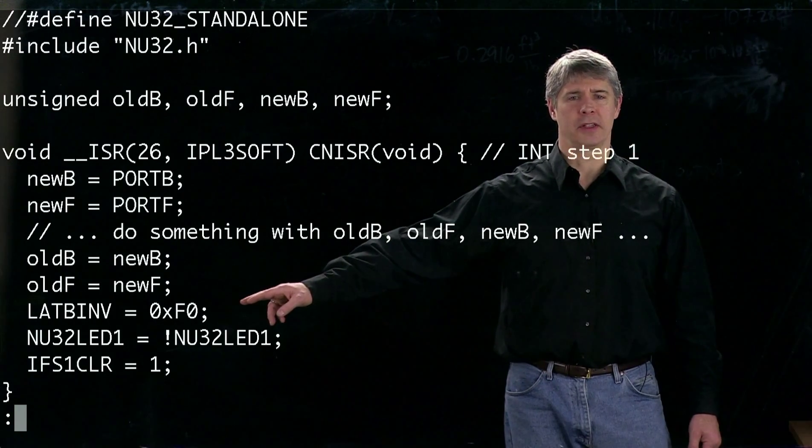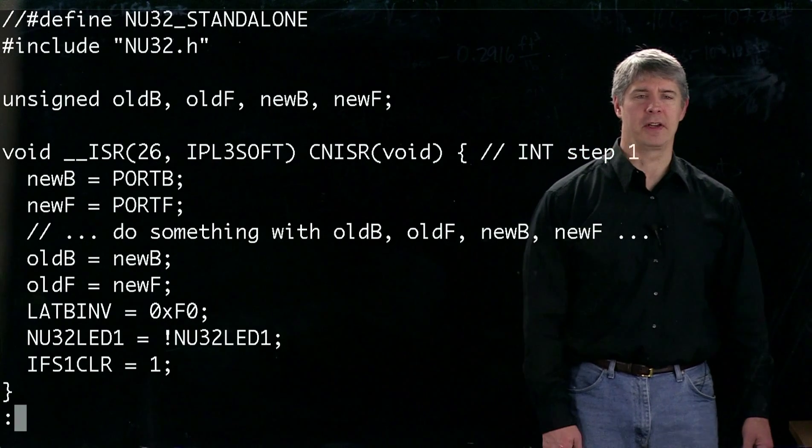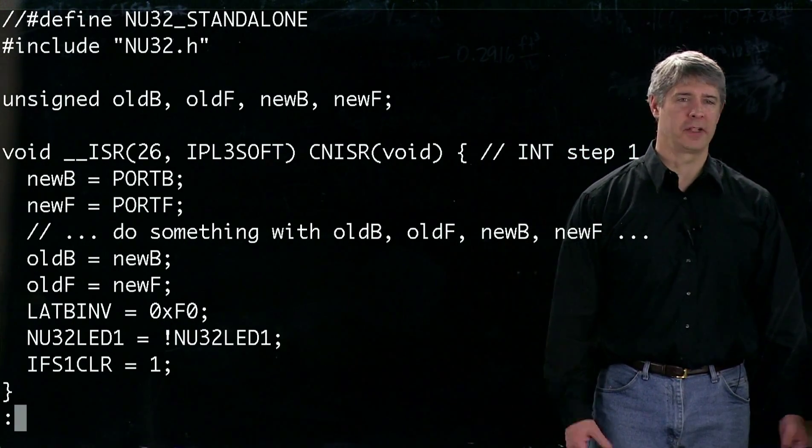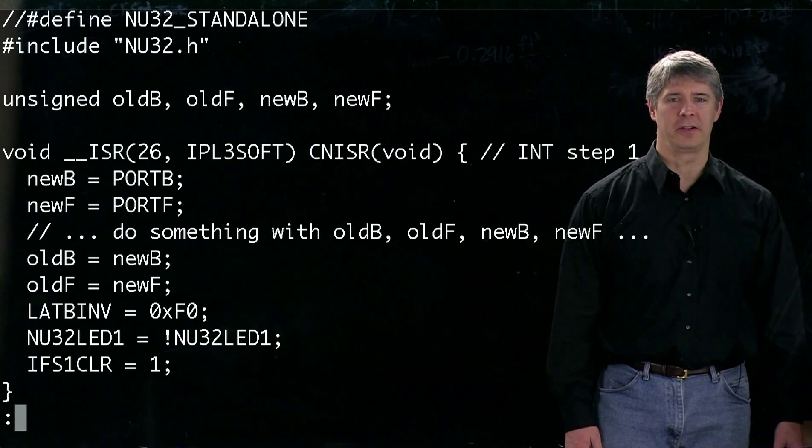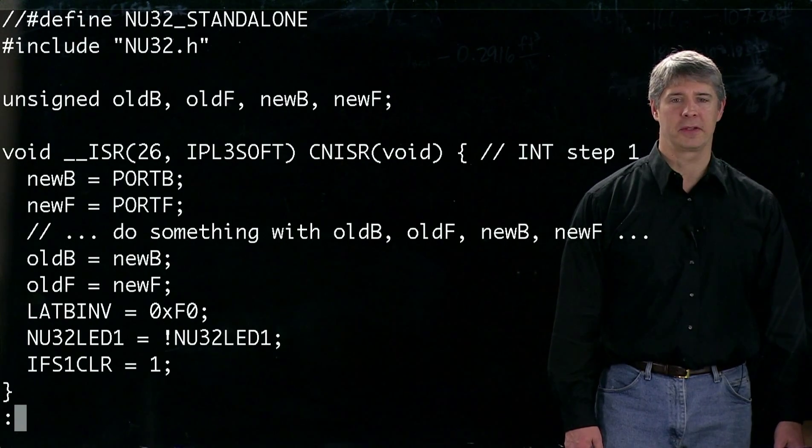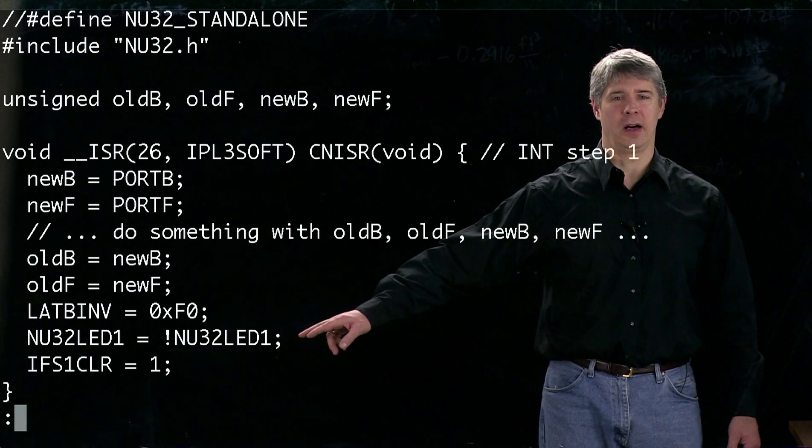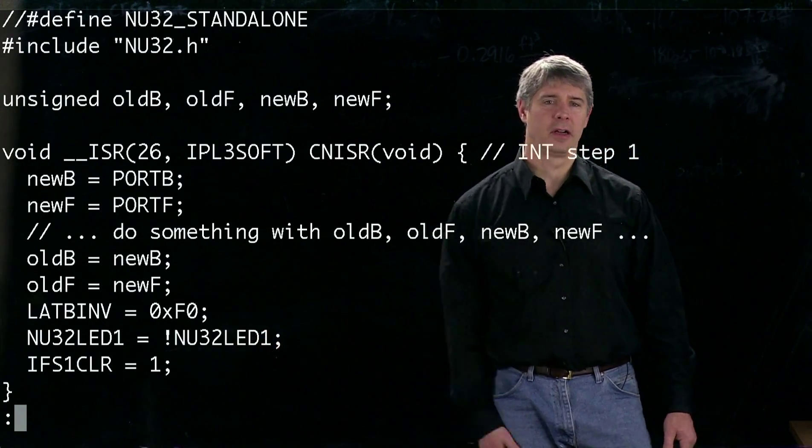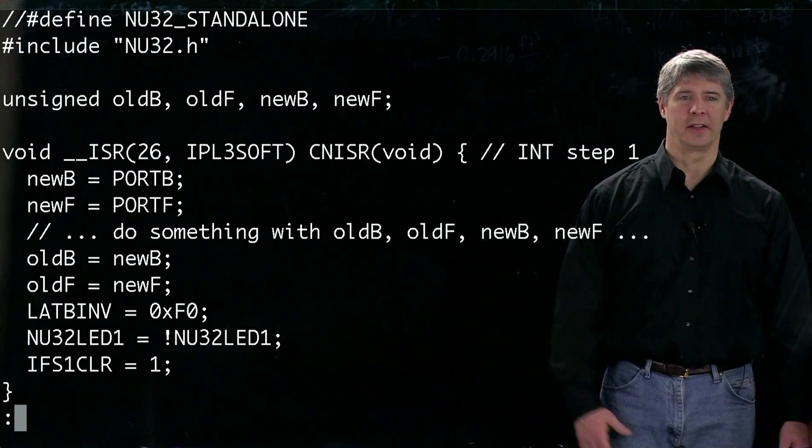Down here, we're going to toggle bits 4 to 7 of port B. The reason we do that is to change the values of four of the outputs. We're going to toggle an LED on the NU32 board. Then finally we clear the interrupt flag and exit the interrupt service routine.